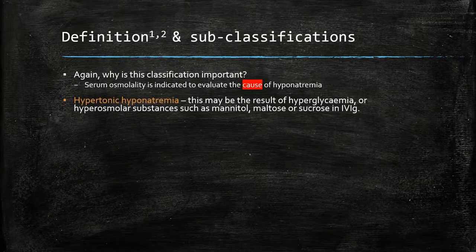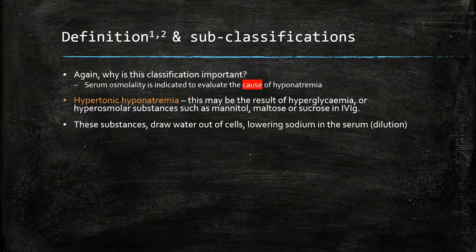Hypertonic hyponatremia in a patient may be the result of hyperglycemia, as glucose has profound effects on plasma osmolality. Other causes include mannitol, mantos, or sucrose in IVIG administration. These substances draw water out of cells, lowering sodium in the serum.